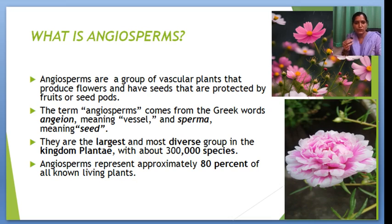First of all, what is Angiosperms? Angiosperms are a group of plants that produce flowers and have seeds that are protected by fruit or seed forms. The word Angiosperms came from Greek words — 'angio' means vessels and 'sperma' means seeds. This group is the largest and most diverse group in India, with about 300,000 species. Angiosperms represent approximately 80% of all living plants.